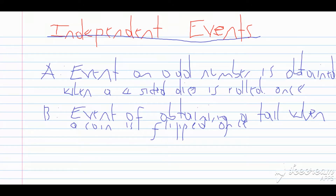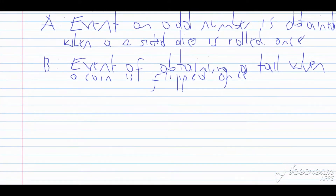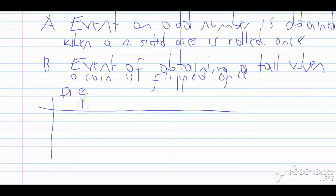Now let us look at these two events. A is the event that an odd number is obtained when a four-sided die is rolled once, and B is the event of obtaining a tail when a coin is flipped once. My four-sided die will have numbers one, two, three, and four. On my coin I'm going to have head and tail.